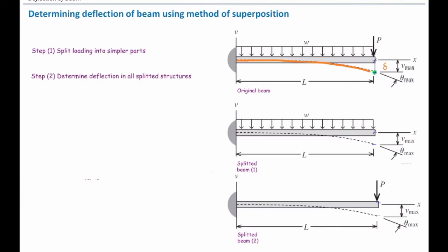Then in the second step, we need to determine deflection in all splitted structures at the same point. So I need to determine deflection of this beam at the right end, and I need to determine deflection of the second beam again at the right end, at the same point. Then, how can I determine these deflections? We use tables to determine those values.